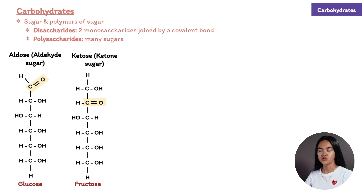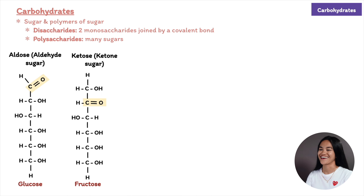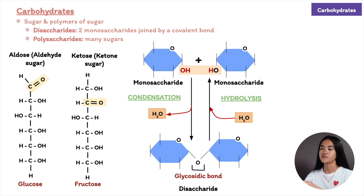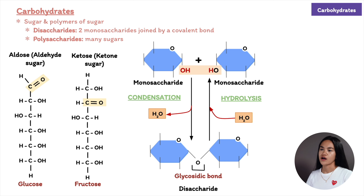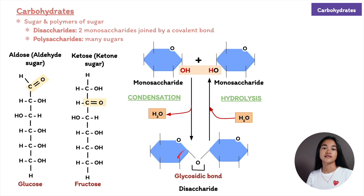Glucose and fructose have six carbons, so they are called hexoses. Glucose is very important in cells because it serves as a source of fuel, which we discuss in the metabolism and cellular respiration lectures. Monosaccharides — specifically their carbon skeletons — are involved in the synthesis of other small organic molecules such as fatty acids and amino acids. A disaccharide consists of two monosaccharides joined by a glycosidic linkage through covalent bonding via a dehydration reaction.